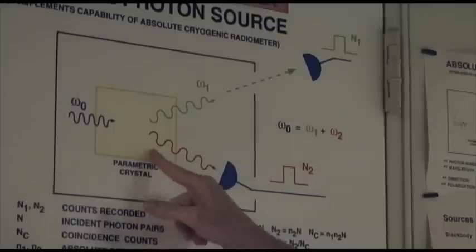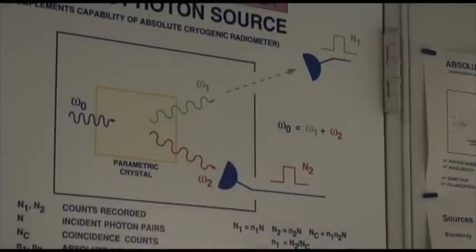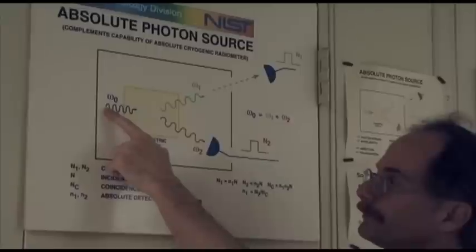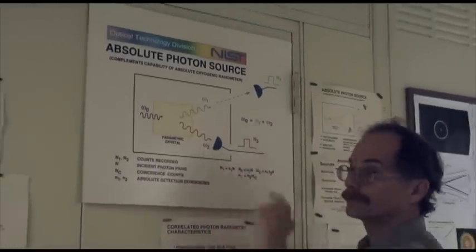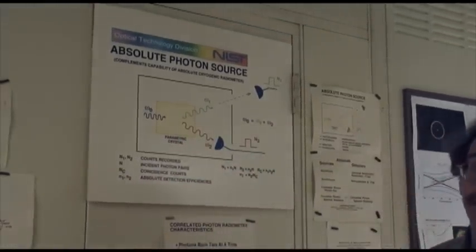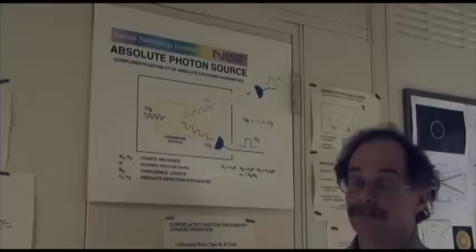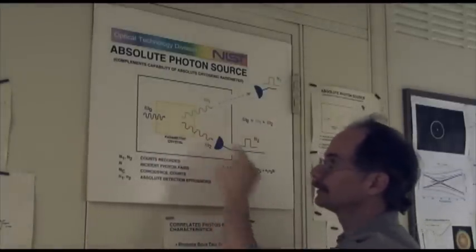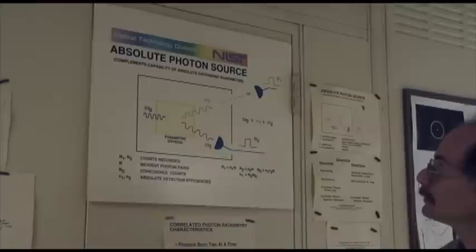This is a nonlinear process. It's relatively weak. So what that means is most of the time this light comes in and goes right through. But on occasion, perhaps one in a million or one in a billion times, one of these photons breaks up into pairs.